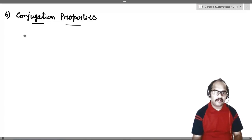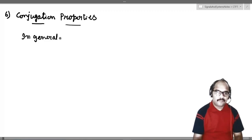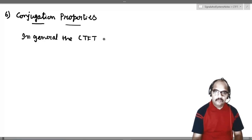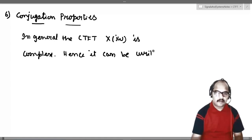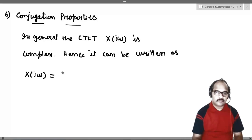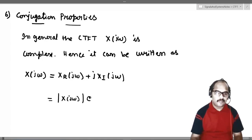Before we go into conjugation properties, let me write this down. In general, the Fourier transform X(jω) is complex. Since it is complex, it can be written in two ways. One is the regular form: X(jω) = X_R(jω) + j·X_I(jω), that is real part plus j times imaginary part. Alternatively, in polar form: X(jω) = |X(jω)| · e^(j∠X(jω)).